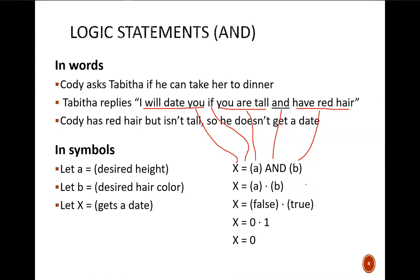That is the only change in this line. Now we substitute in the known values for the input variables. Is the desired height met? No, that is false. Is the desired hair color met? Yes, that is true. Even shorter, we can write a 0 for false and a 1 for true. As a last step, we apply the AND logic operation to find that x equals 0. In other words, this means false. Cody does not get a date.